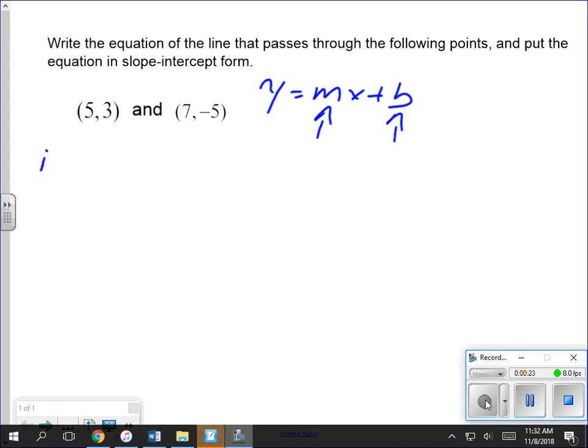So first, step number one, find m. m equals, remember the formula you used, change in y over change in x. So 3 minus negative 5 over 5 minus 7.